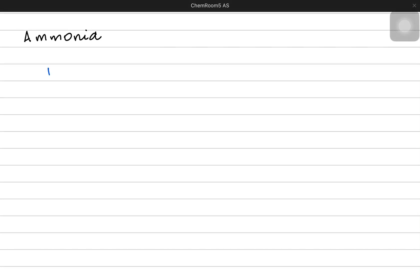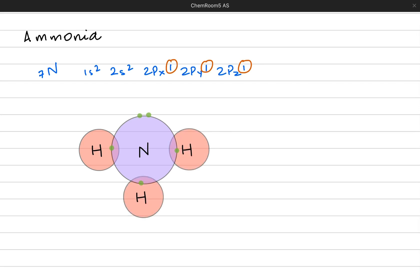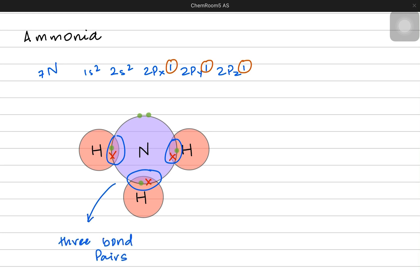Now let's continue and study ammonia, which has the chemical formula NH3. Nitrogen with seven electrons has the configuration 1s2, 2s2, 2px1, 2py1, and 2pz1, where each p orbital has an unpaired electron. There are three unpaired electrons which make single covalent bonds with three hydrogen atoms. There are three bond pairs around the central nitrogen atom and one lone pair. The lone pair resides in the 2s orbital while the three bond pairs are formed by the three sigma bonds of nitrogen with three hydrogen atoms.